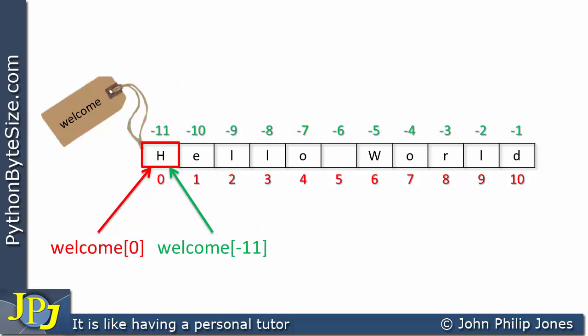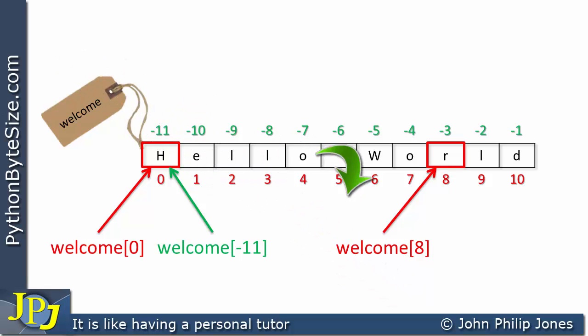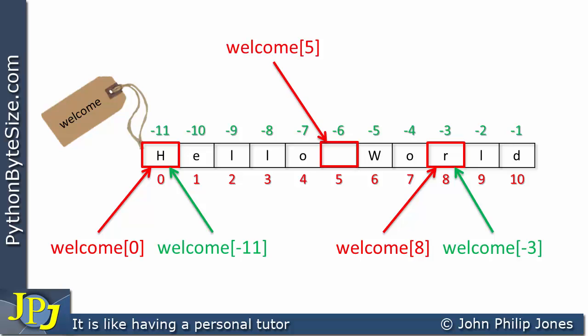If I wanted to get at the R in the word 'world', I use the same name 'welcome' with the appropriate index number in square brackets. Using backward indexing, I can use welcome[-3]. I also want to get at the gap that appears between the words 'hello' and 'world'. That gap has the index 5 using forward indexing, so welcome[5], or welcome[-6] using backward indexing.